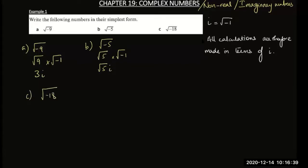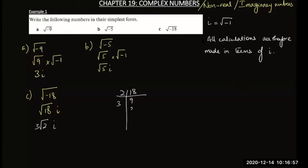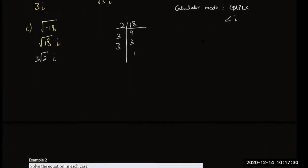You can also simplify further — for example root of minus eighteen i. Root of eighteen can be simplified: root of eighteen equals three root two, so root of minus eighteen becomes three root two times i. So this is just a way of simplifying complex numbers. You can also use your calculator directly in complex mode to do most of these calculations.